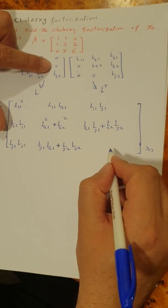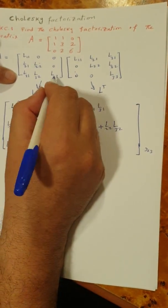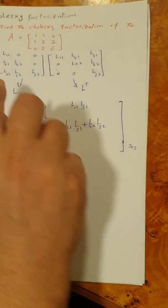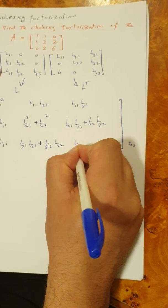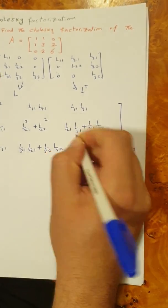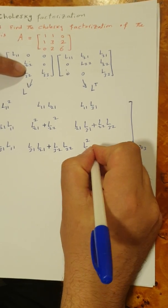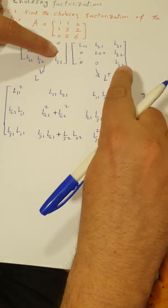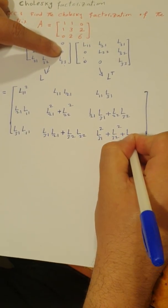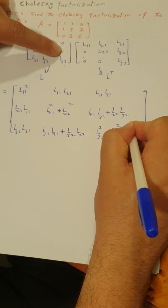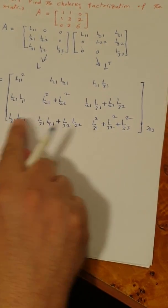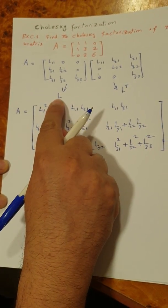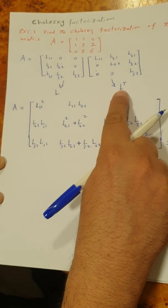Finally, to find the last diagonal element, we multiply the third row by the third column: L31 squared plus L32 squared plus L33 squared. So the product matrix L times L-transpose now equals the matrix A, which is the product of matrix L multiplied by its transpose.